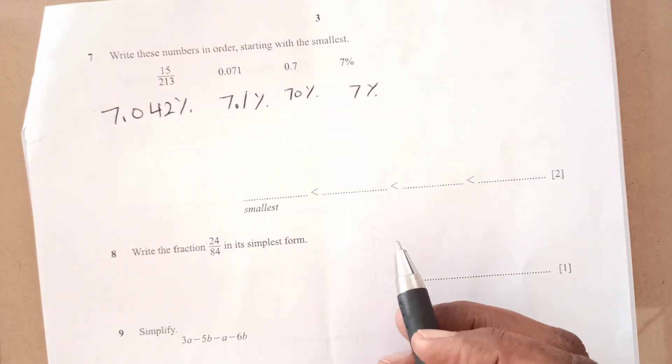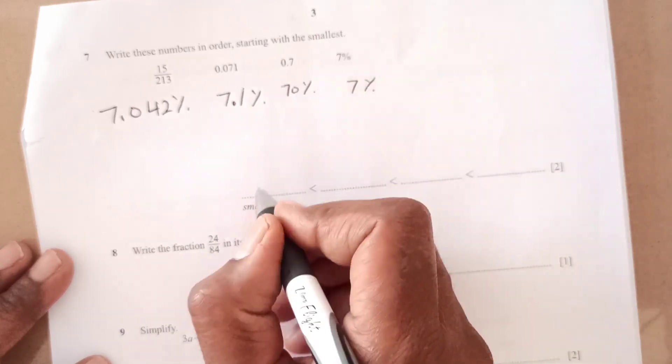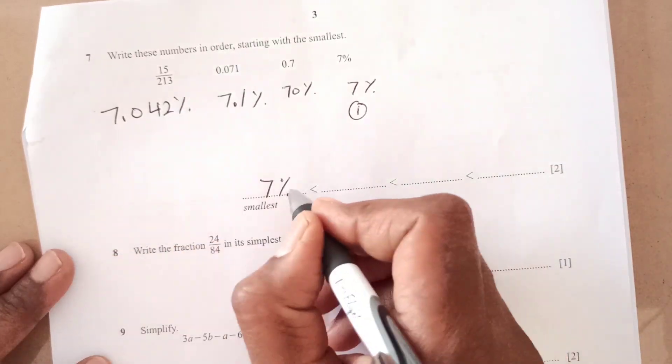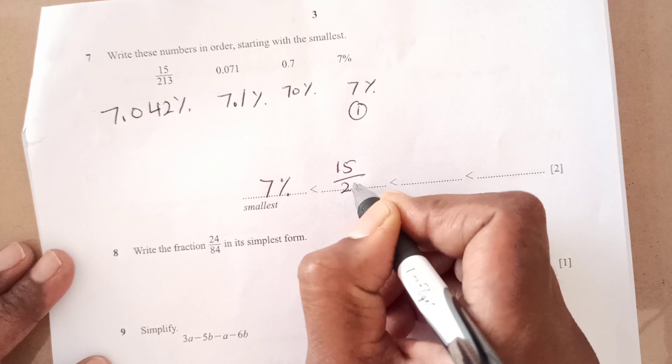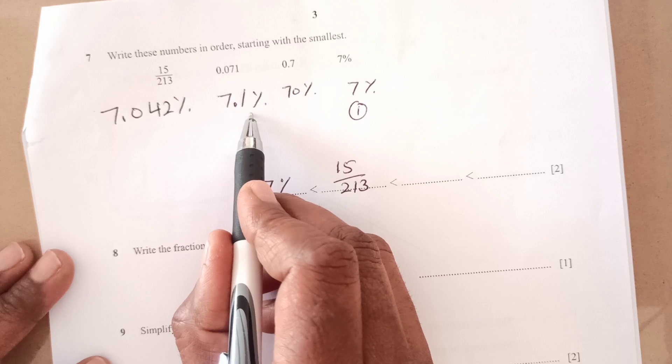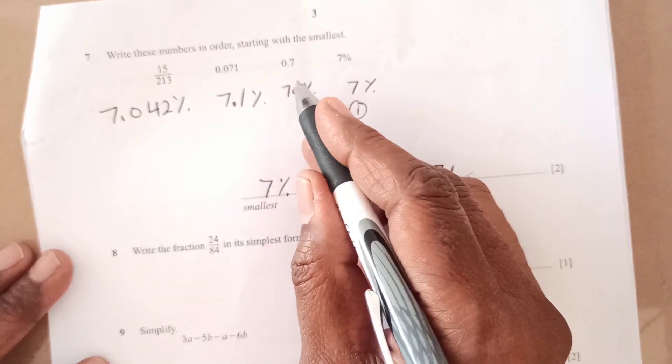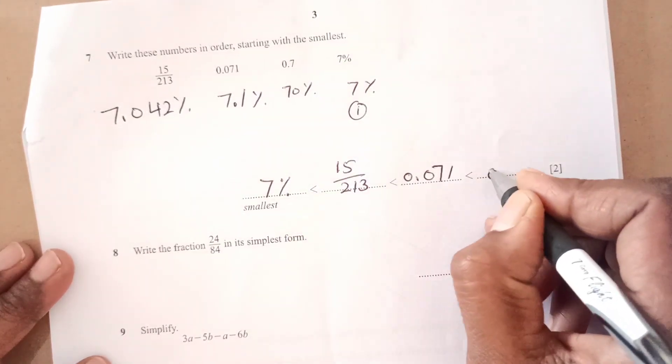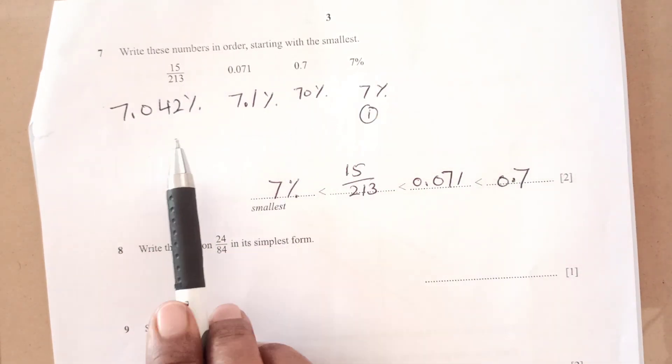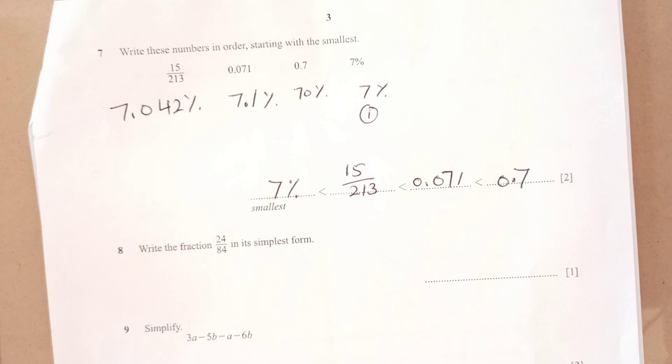Now, we can see which one is the smallest here. The smallest one if you see is here. This is 7. So we will write the original form here 7 percent, number 1 here. After that 7.02. This is 15 over 213. Then we have 7.1. This is 0.071 and then lastly, we have this 0.7. Remember to write the answers in original form. Sometimes students make common mistake when they calculate this, they just write this answer. That will not be acceptable.